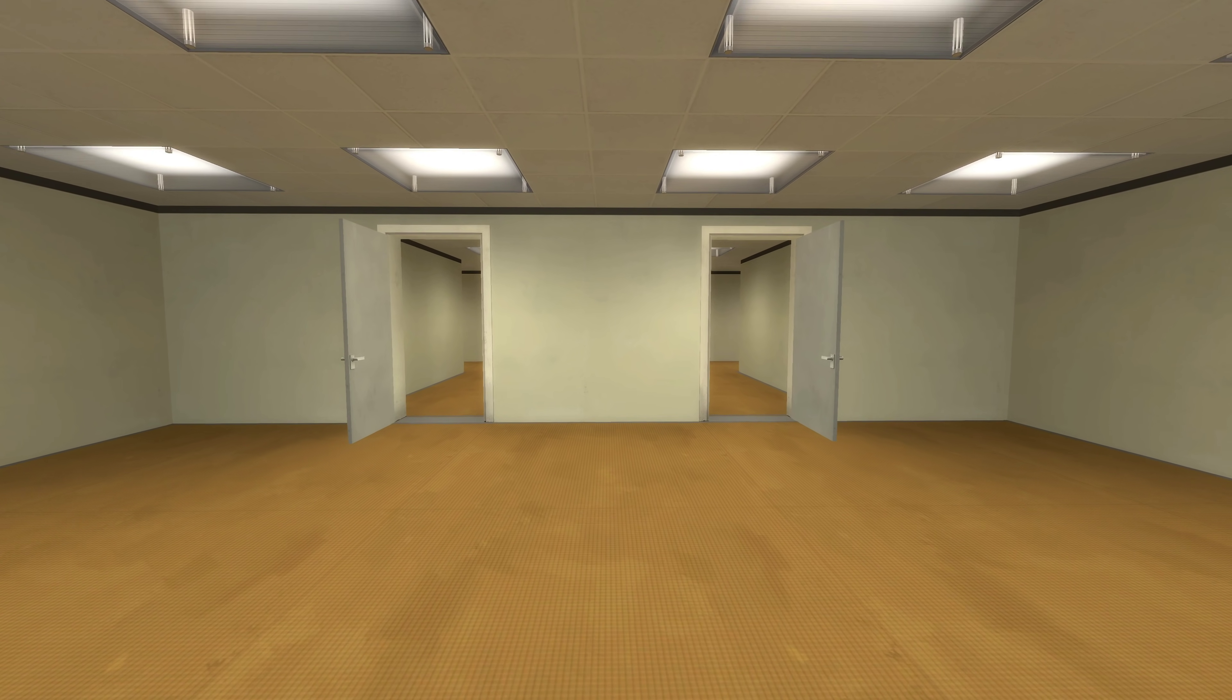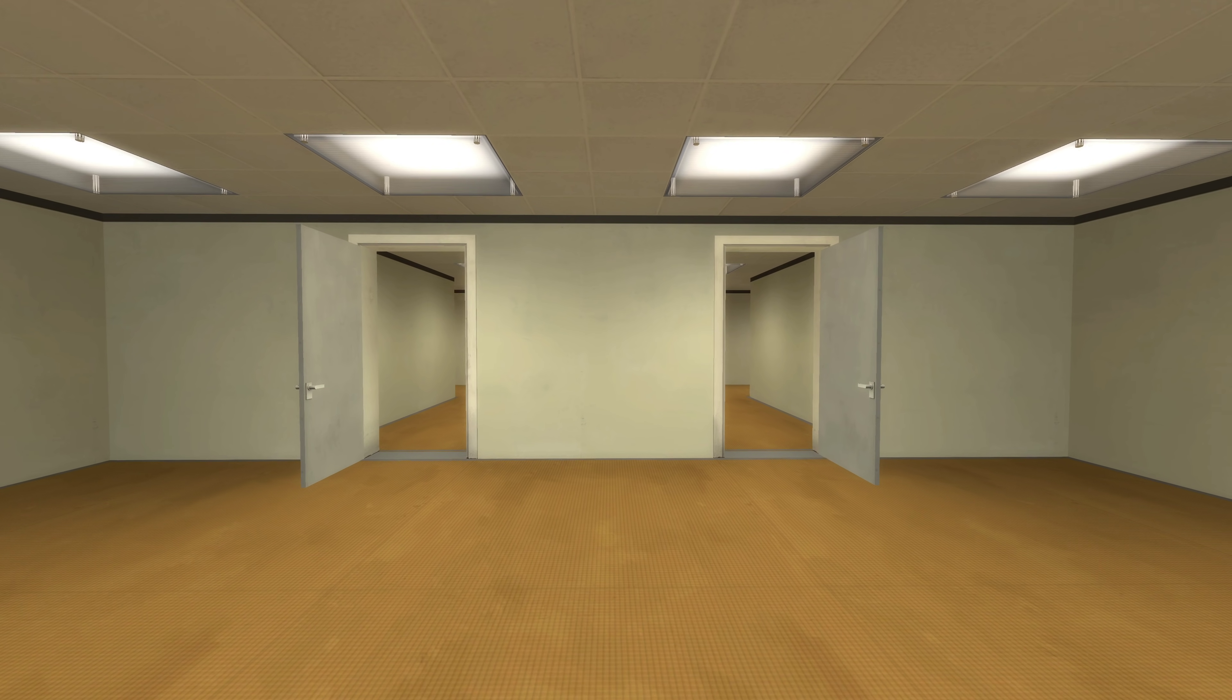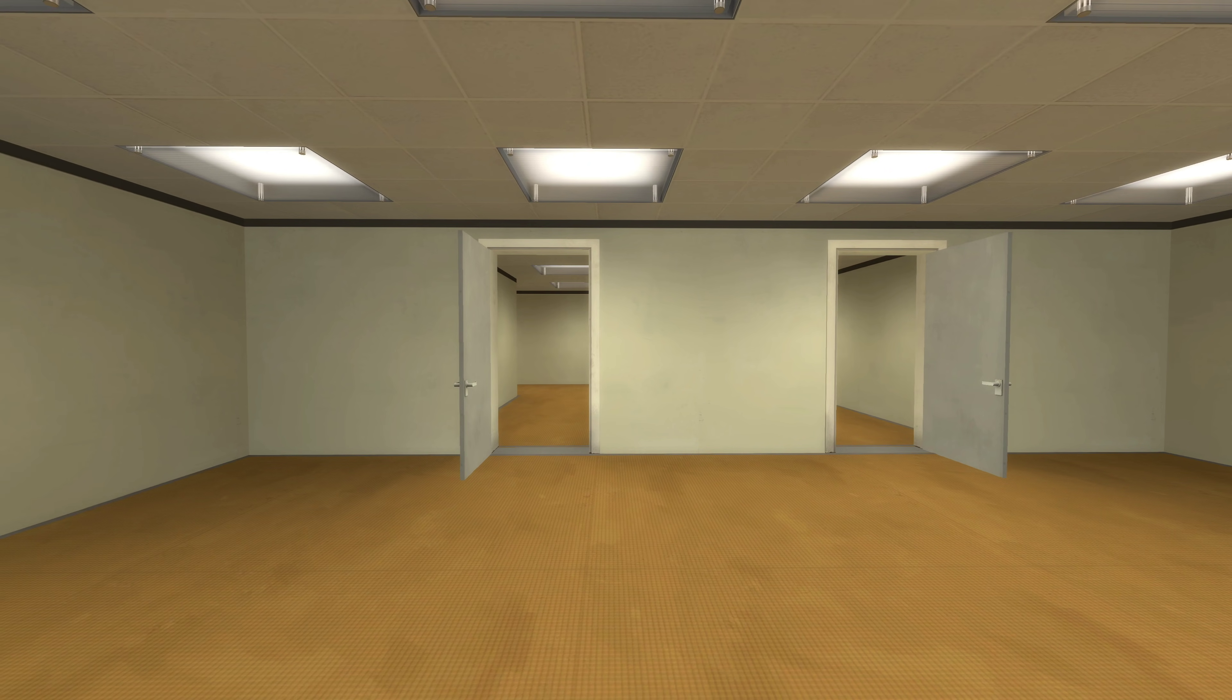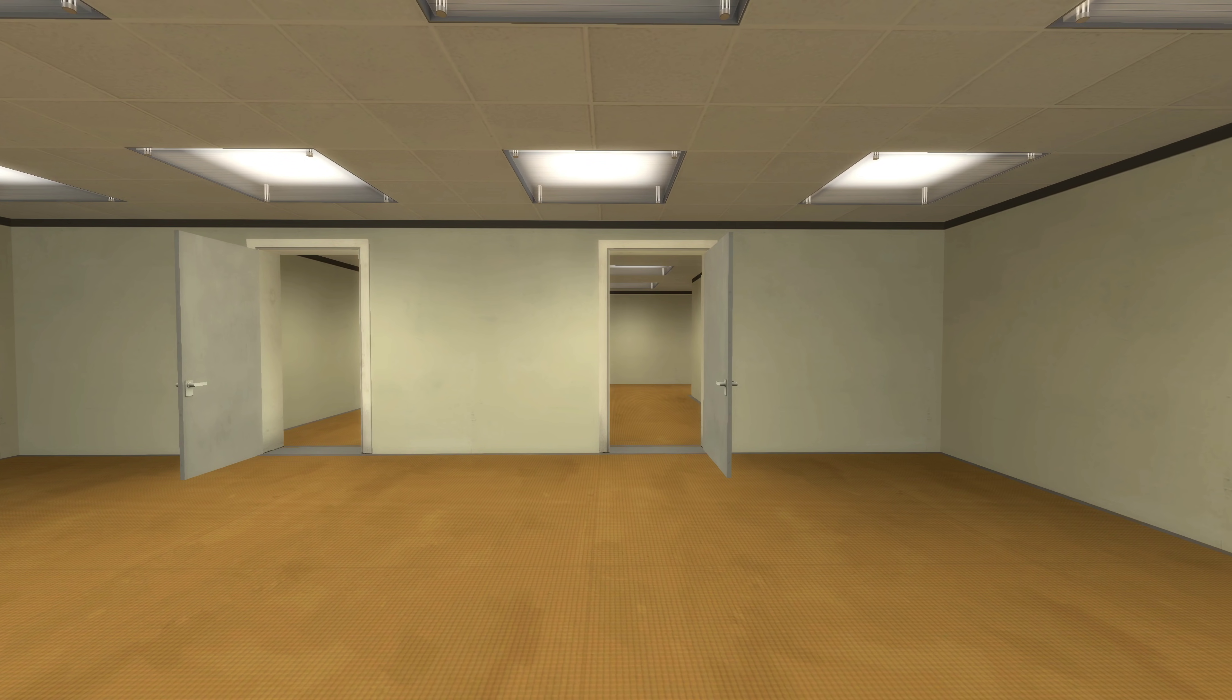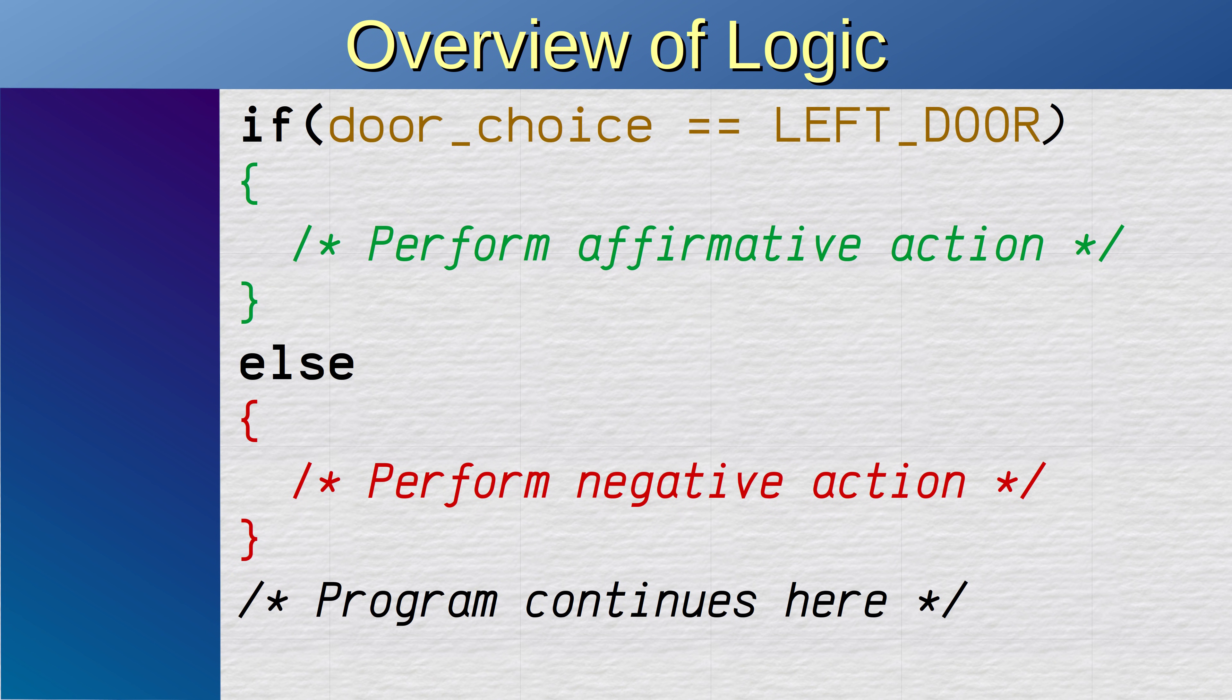In our life, we are often faced with choices. Such as, do we enter the left door or do we enter the right door? In programming, we deal with this kind of decisions with the if-statement. In this case, the program may choose exactly one of these paths. If the left door was entered, it performs the affirmative actions. If the right door was entered, it performs the negative actions. There are clearly only two options.